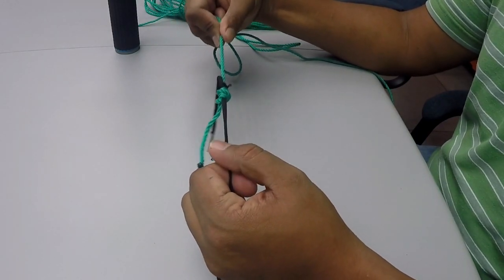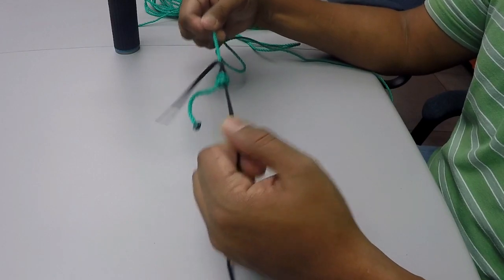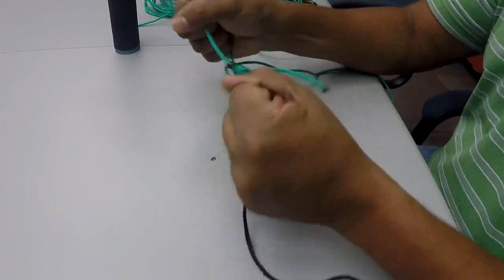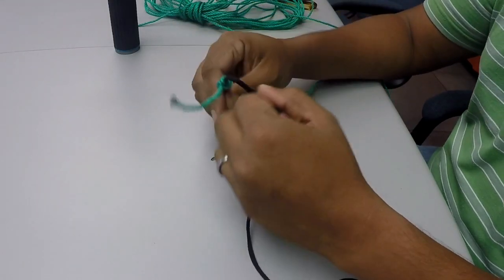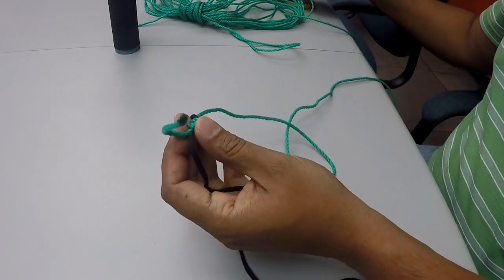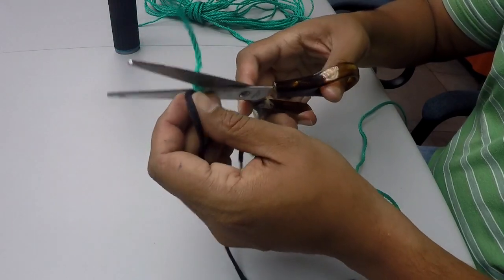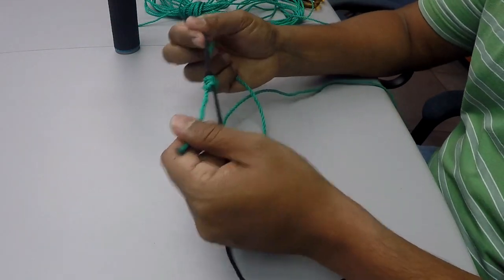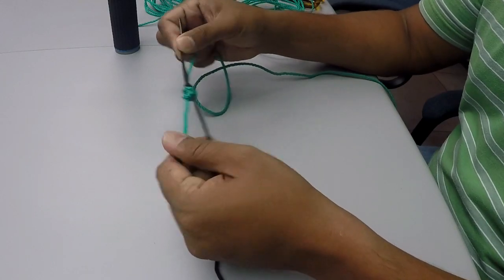Leader to leader, leader to mono, braid to mono leader, braid to floral leader, braid to braid, mono to mono. Those two lines are not going to be loose. So simply from here, you take your scissors, you cut up the tag ends, one, two, as close as possible. And that's the basic double uni knot. Very easy, very simple.